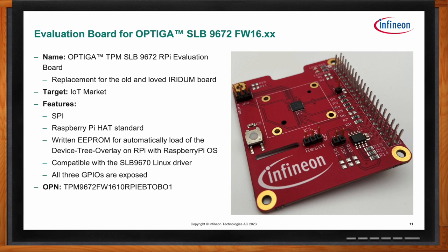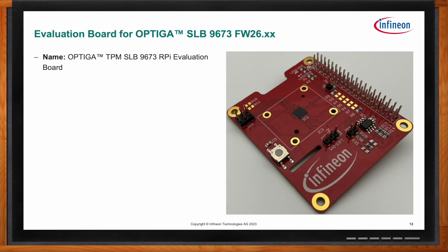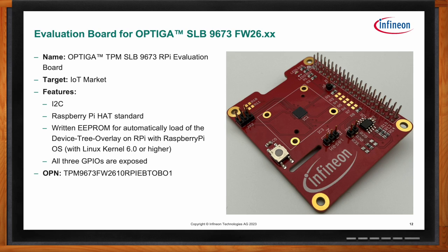When you connect this board to a Raspberry Pi and boot up Linux, it will automatically configure the TPM device and the Linux kernel will start using it. For the 9673, we have the same capabilities — the difference is the I2C standard — but again with the same auto-configuration via the Raspberry Pi HAT standard. The three GPIOs from the TPM for interacting with sensors and actuators are also exposed, visible as JP2 on the top left of the picture.